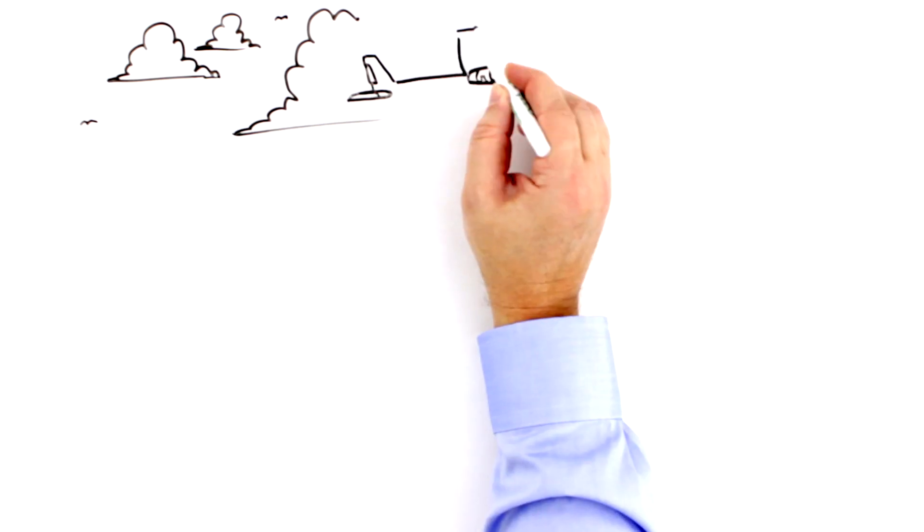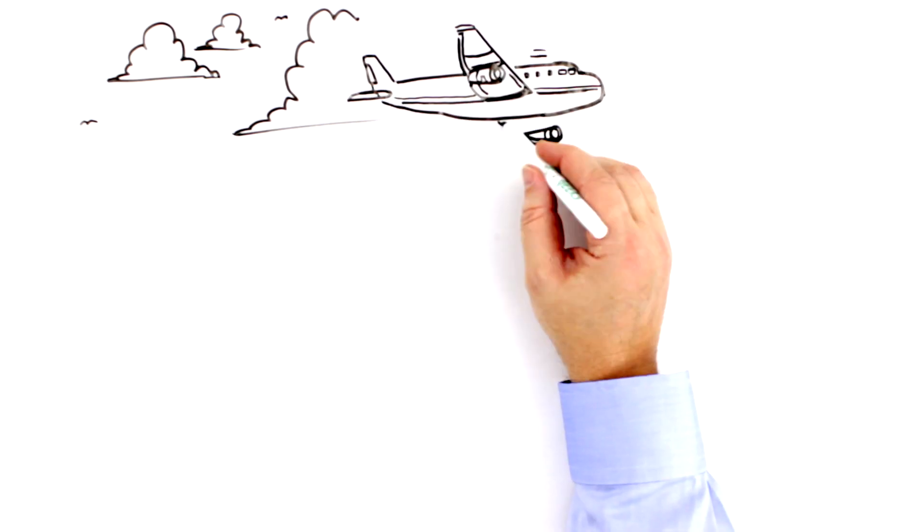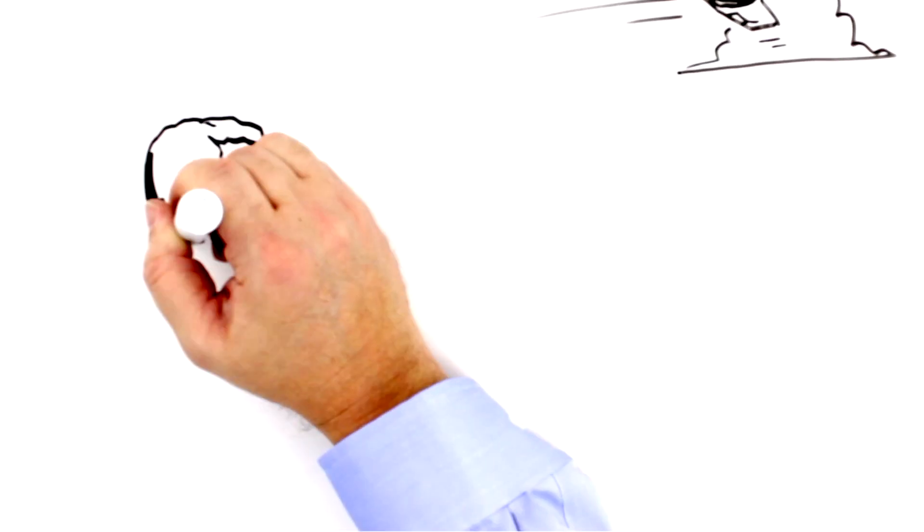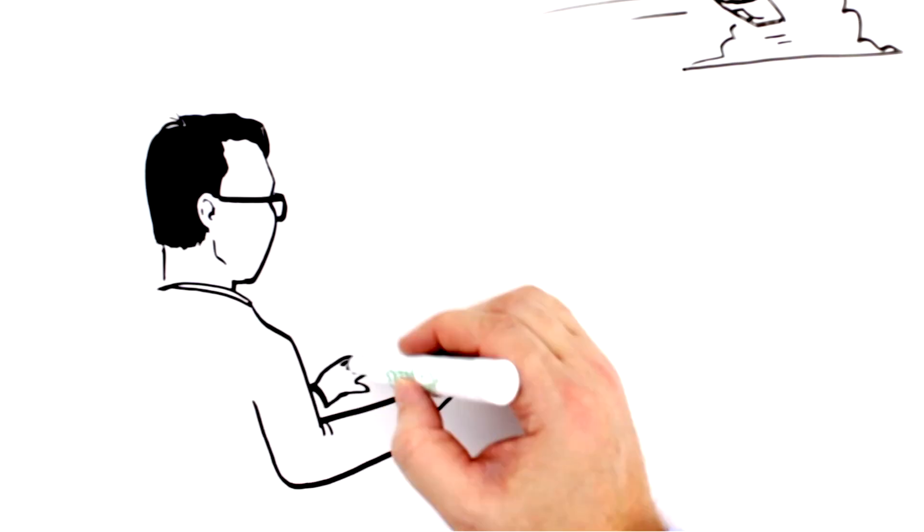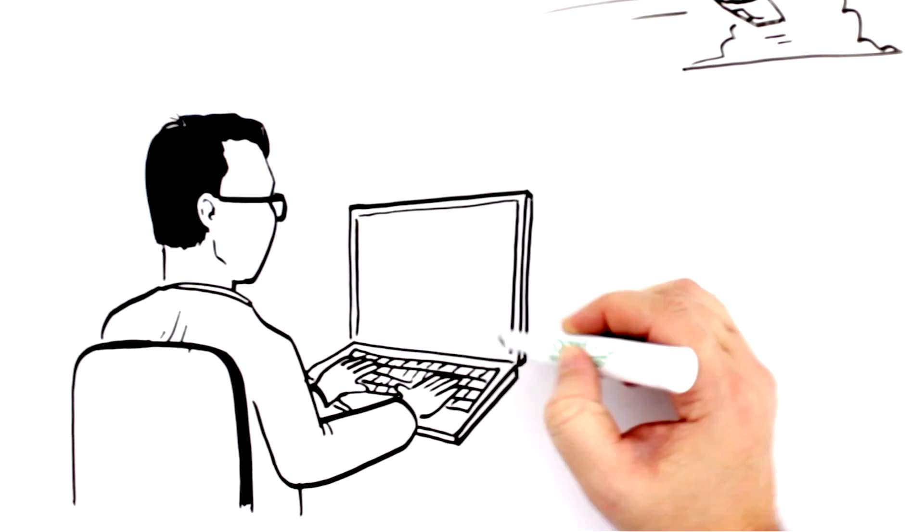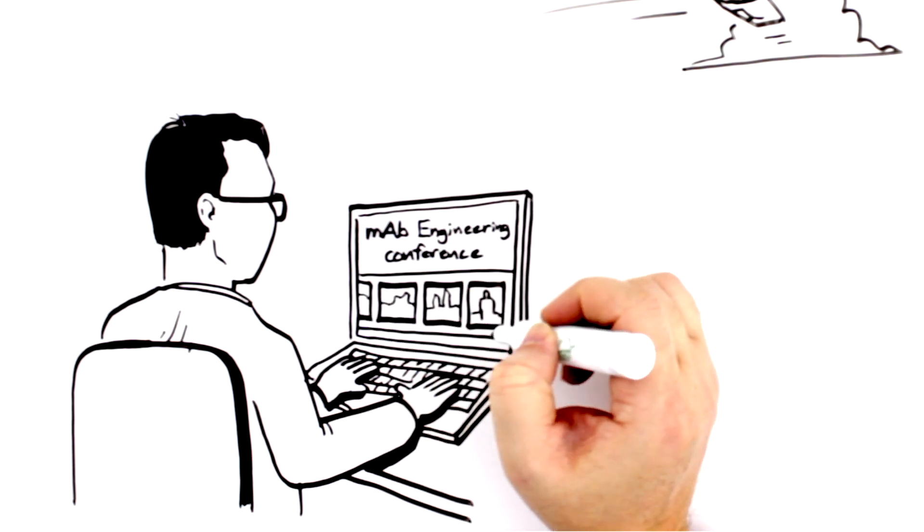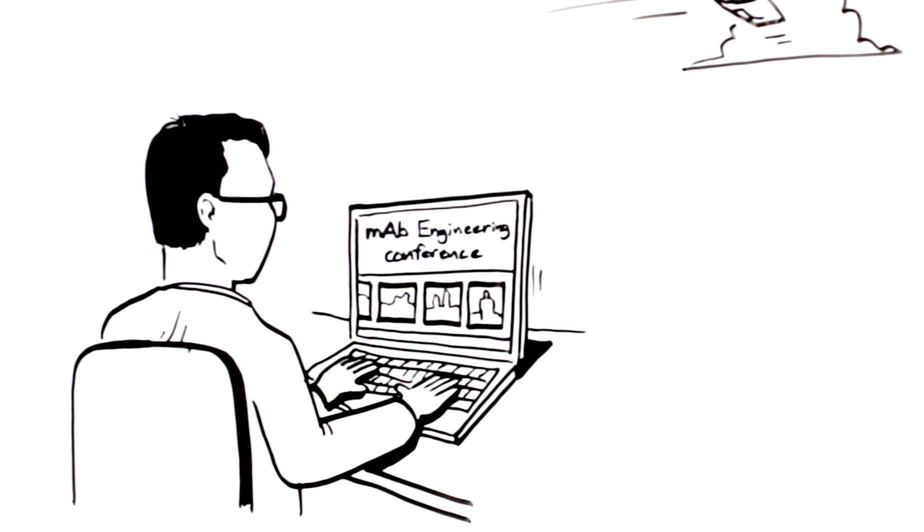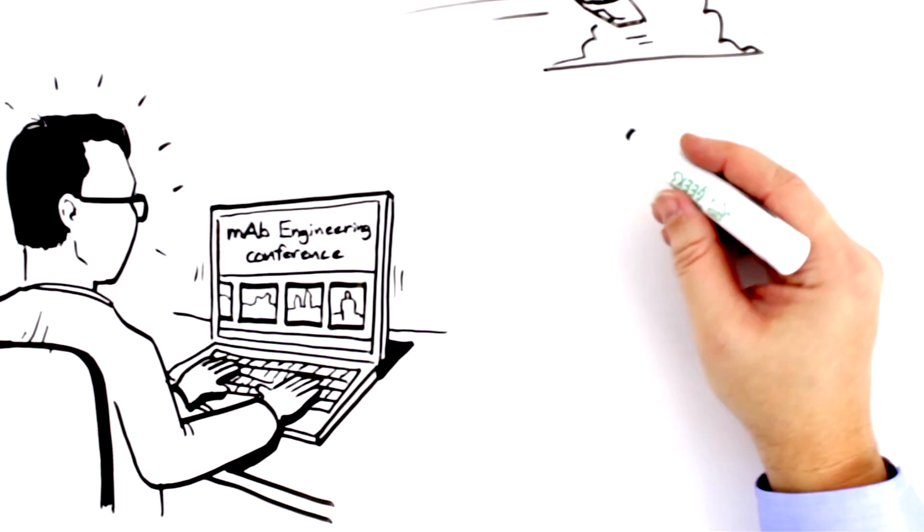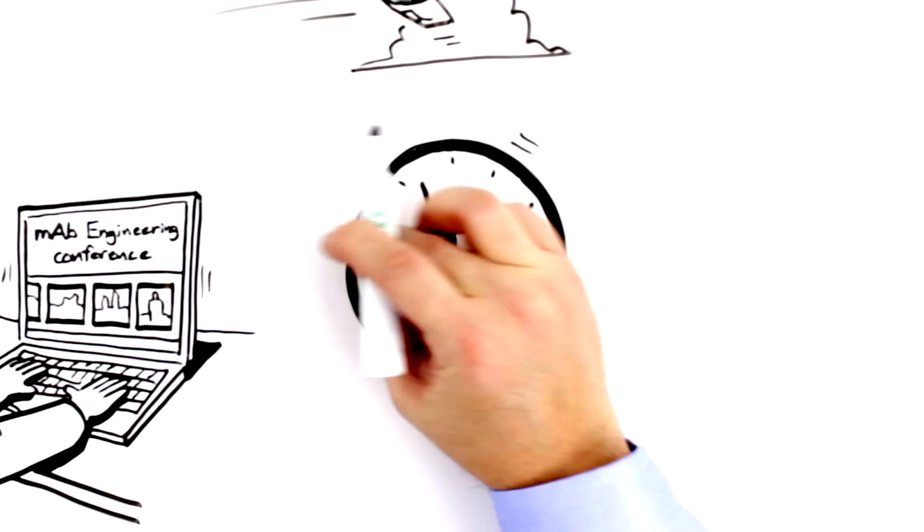On his way to the annual MAB engineering conference, Mo sees in the abstracts online that his competitor is presenting preliminary data on the same target his team has been working on. The stakes just got higher. Mo knows that if he can't produce viable hits soon, his competitors might beat him to the market. Now the clock is ticking.